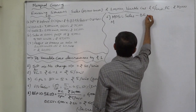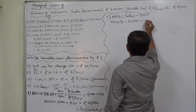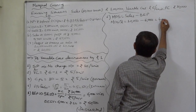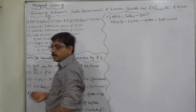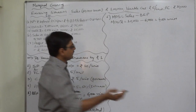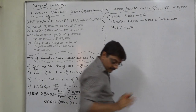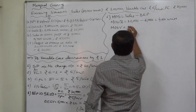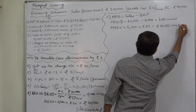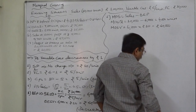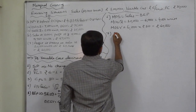Now the margin of safety: actual sales minus break-even sales gives 10,000 minus 6,000 equals 4,000 units, up from 2,500 units in the existing situation — a considerable increase. Margin of safety value equals 4,000 units multiplied by selling price of rupees 10, giving rupees 40,000, up from rupees 25,000. Profit-giving sales have increased significantly, which is very good for the company.